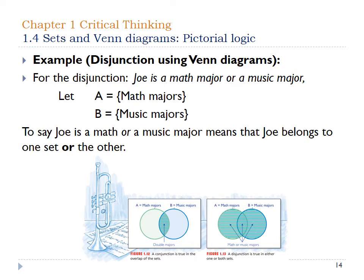The other situation — a disjunction — means he could be a math major or a music major. In Figure 1-13, the shaded areas cover all three sections because he's a math major or a music major. The middle piece where both overlap could also happen in that situation.